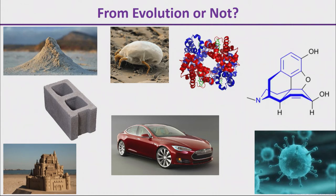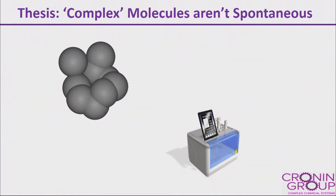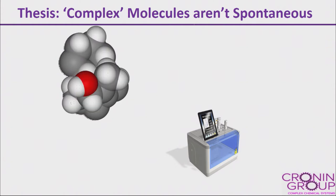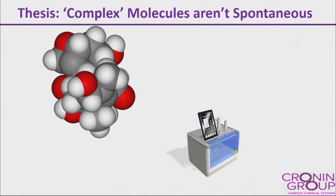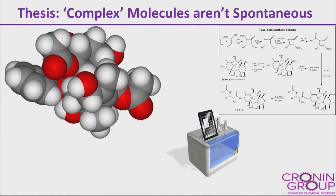I want to argue that molecules are really great — when they're complex enough — as evidence of evolution. They were produced using an evolutionary process. The thesis is that complex molecules aren't spontaneous; that is, molecules that you can find in any abundance. So this is a molecule which is kind of large, made by biology, called Taxol, which is a relatively good anti-cancer drug. The idea we've been exploring in my lab is to try and make drugs using robots and understand the digital information: how big does my program need to be to make the molecule?